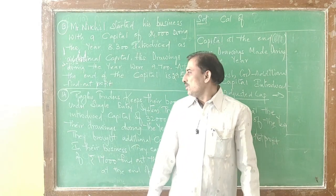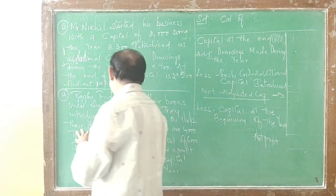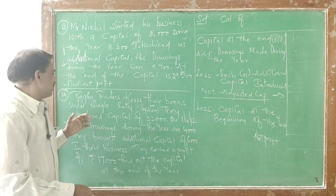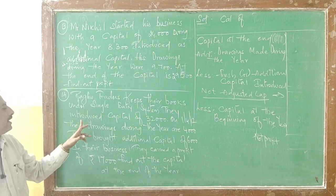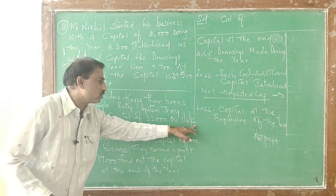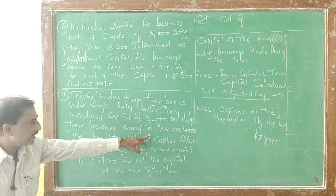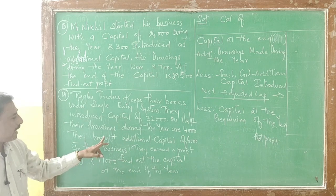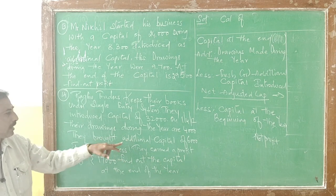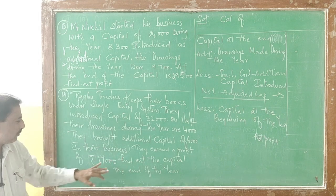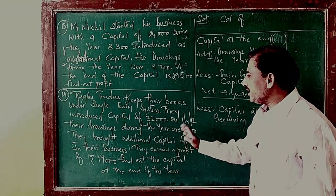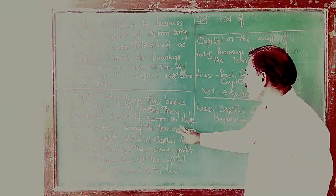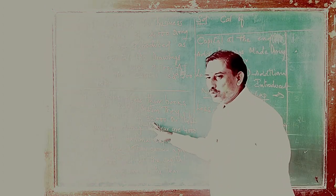We are continuing our regular class and doing one more topic. Rabu Traders keeps their books under the single entry system. They introduced a capital of 30,000 on 1st April 2012. Their drawings during the year are 4,000. They brought additional capital of 6,000 into their business. They earned a profit of 17,000. Find out the capital at the end of the year.